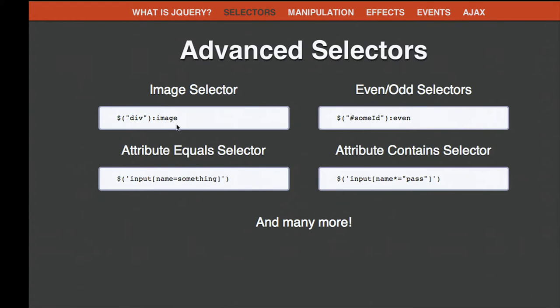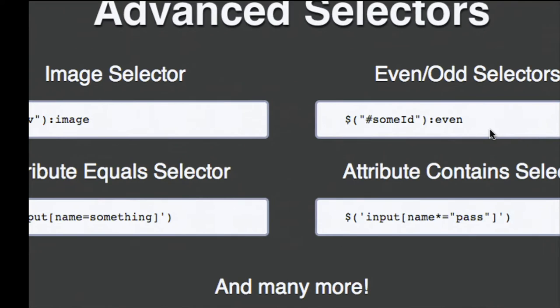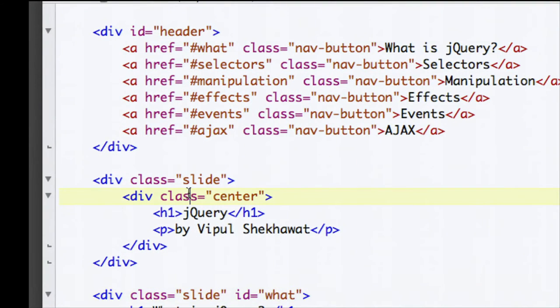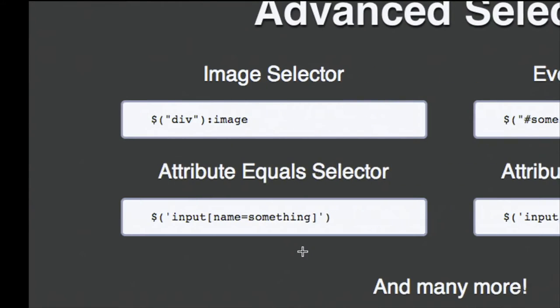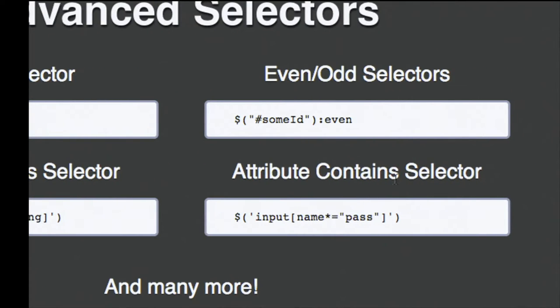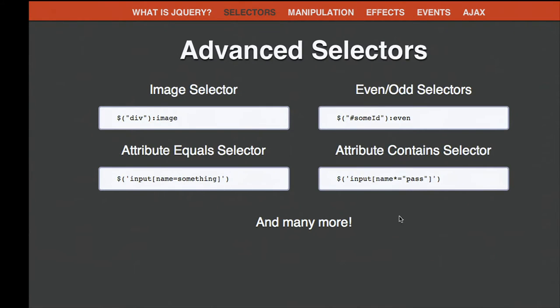Some advanced selectors—there are dozens of these. You can select all image tags within some element using colon image. To select even-indexed elements, use colon even; for odd ones, colon odd. These are pseudo-selectors that compute every other element. Each element can also have specific attributes—for example, href is an attribute of anchor tags. You can select something that links to a specific page using attribute selectors. You can also use attribute-contains to select elements like an input with the word 'pass' in its name, such as a password field.